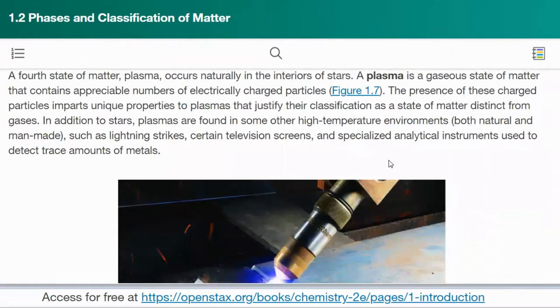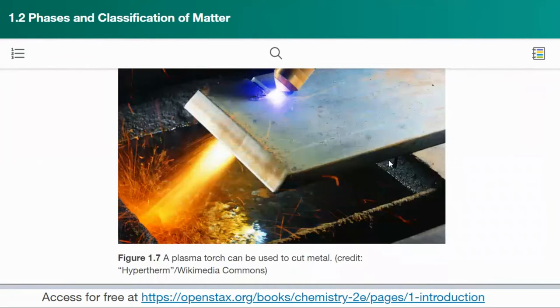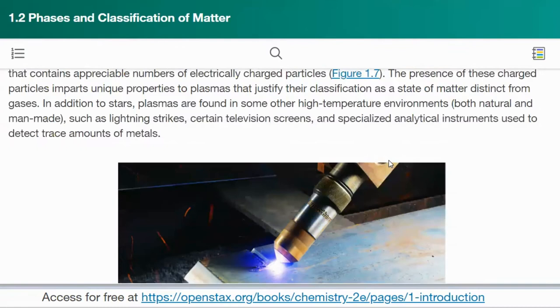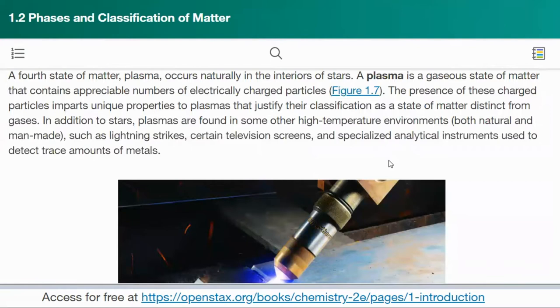The fourth state of matter, plasma, occurs naturally in the interiors of stars. A plasma is a gaseous state of matter that contains appreciable numbers of electrically charged particles, Figure 1.7. By the way, I studied plasma physics. I think there are plasmas even outside of stars, like in the solar system, if I recall correctly.